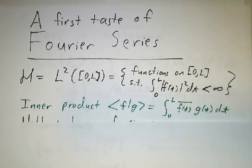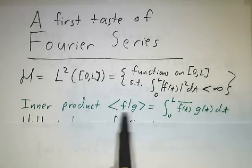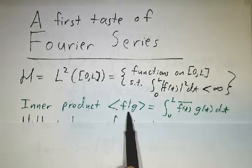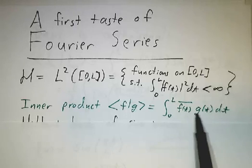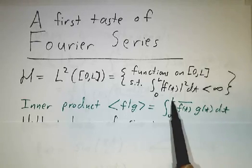We have an inner product on this space. The inner product of two functions is the conjugate of the first times the second, integrated from 0 to L.